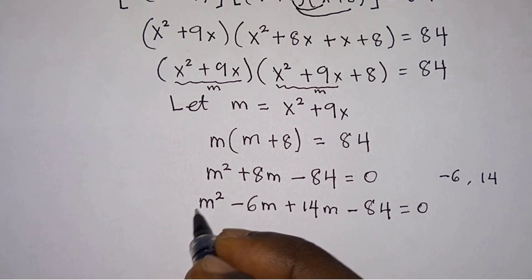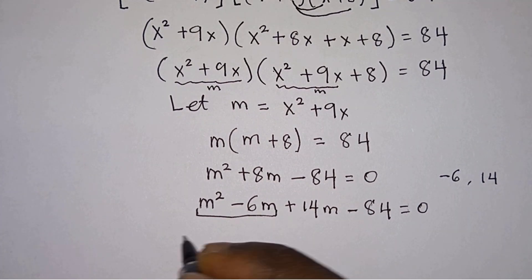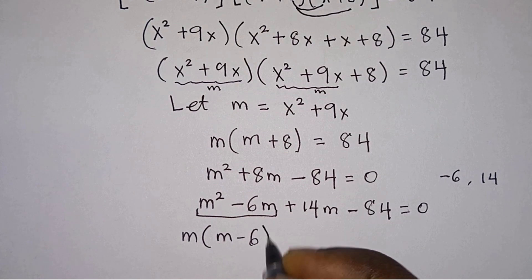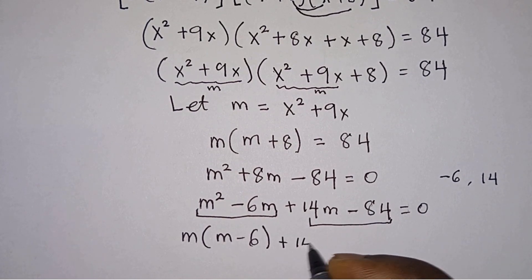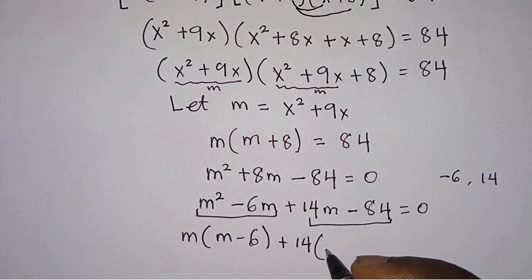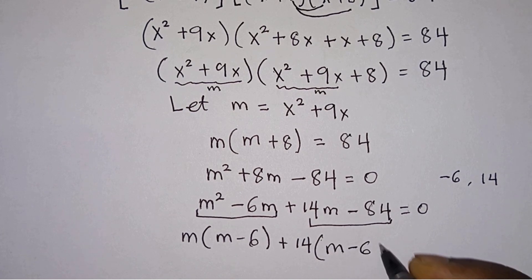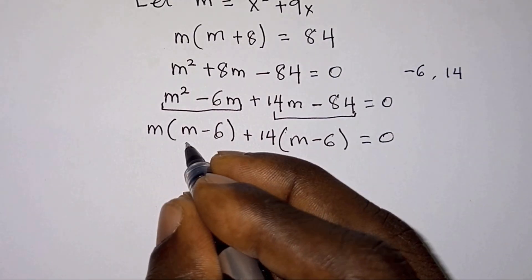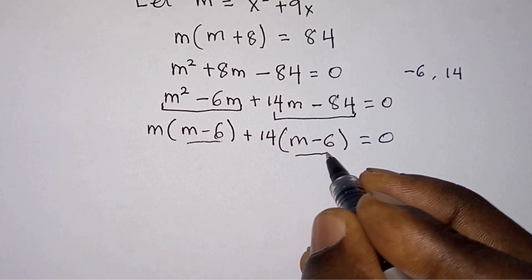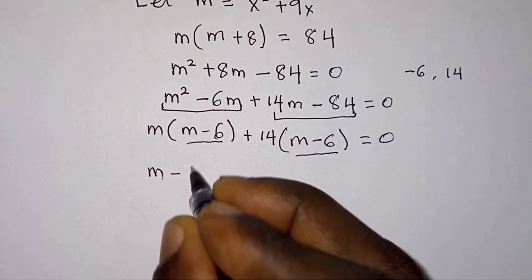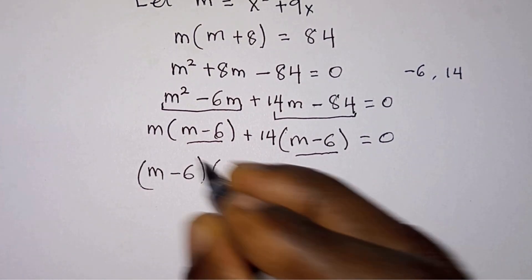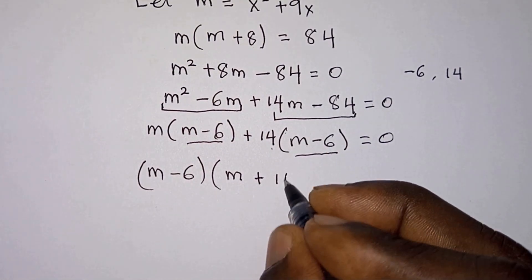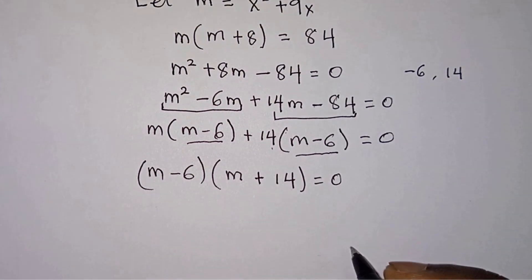From the first two terms we can take m out, giving m times m minus 6. Then from the next two terms we take positive 14 out, leaving m minus 6, and this equals zero. We have m minus 6 appearing in both groups, so we factor it out: m minus 6 times m plus 14 equals zero.